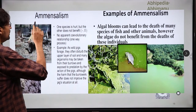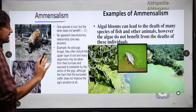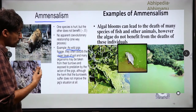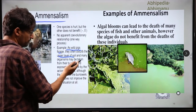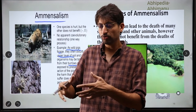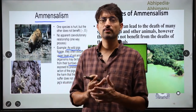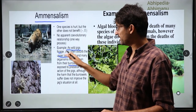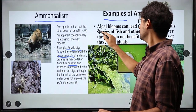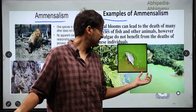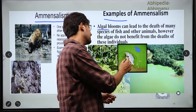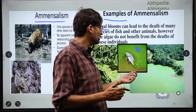Now let's look at amensalism — where one species has zero effect and the other is negative. For example, wild pigs destroy soil as they forage, exposing organisms from roots and making them vulnerable to predation. The pigs don't particularly benefit or lose, but the other organisms are harmed. Similarly, with algal bloom, algae increase and bloom, but the bloom causes fish deaths due to oxygen depletion. Algae have zero benefit from this outcome, but fish populations are harmed — so this is a negative and zero category.